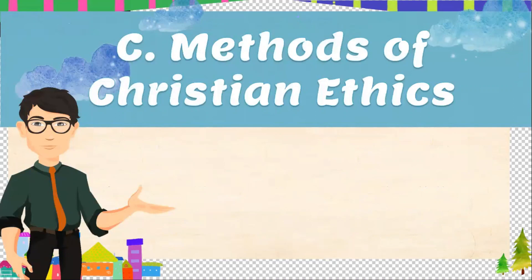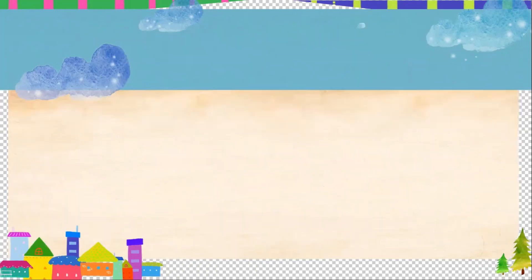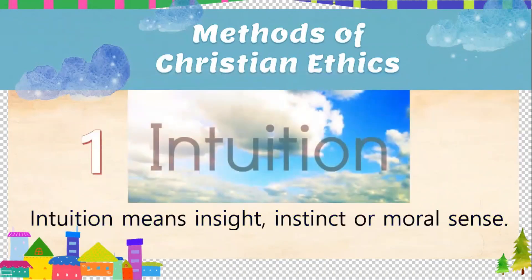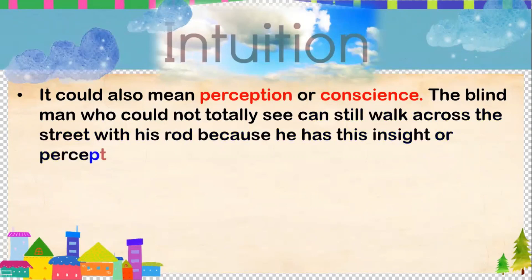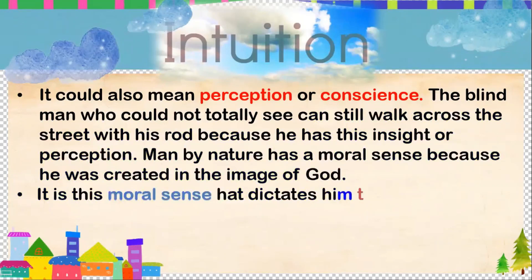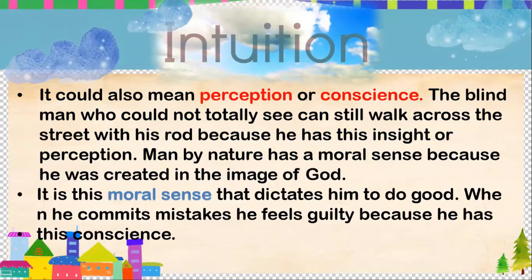Finally, let's proceed to the methods of Christian ethics. What are the methods we can use in choosing Christian ethics? Firstly, is intuition. Intuition means insight, instinct, or moral sense. It could also mean perception or conscience. A blind man who cannot totally see can still walk across the street because he has this insight or perception. Man, by nature, has a moral sense because he was created in the image of God. It is this moral sense that dictates him to do good. When he commits mistakes, he feels guilty because he has this conscience. So every one of us is given by God with intuition.